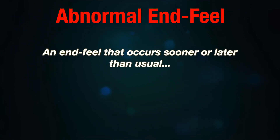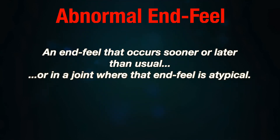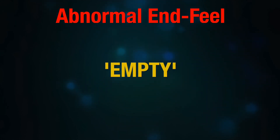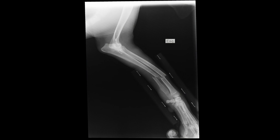The abnormal end feels are generally described as an end feel that occurs sooner or later in the range of motion than is usual, or in a joint where that end feel would not be expected. In addition to the soft, hard and firm types, an abnormal end feel can also be empty, where there is no real end because pain prevents the individual from reaching end range of motion. No resistance is felt except for the patient's protective muscle splinting or muscle spasm.